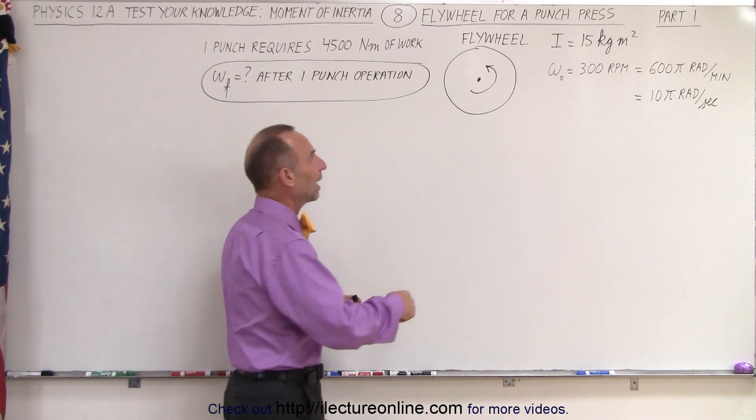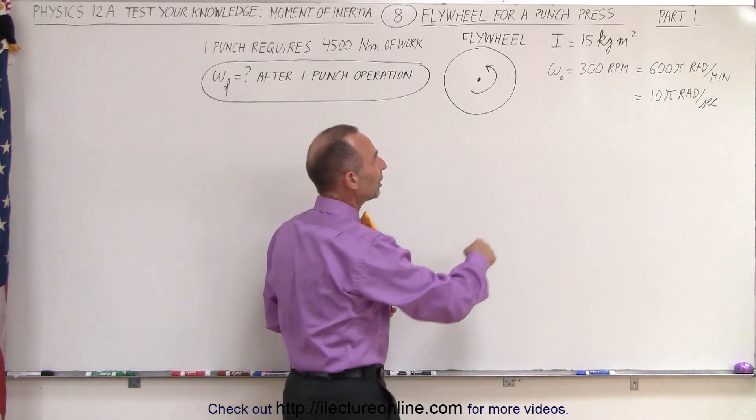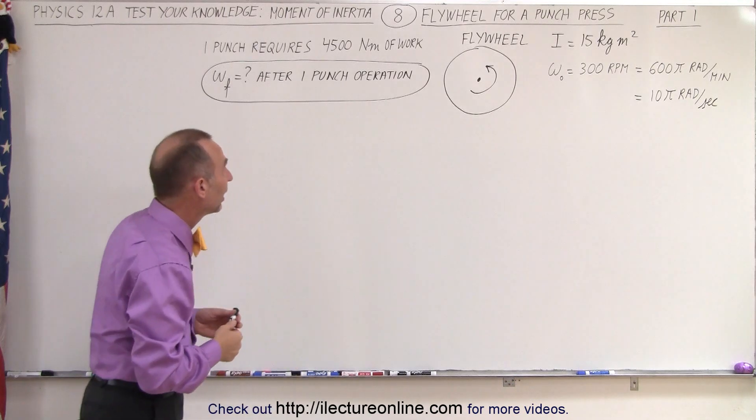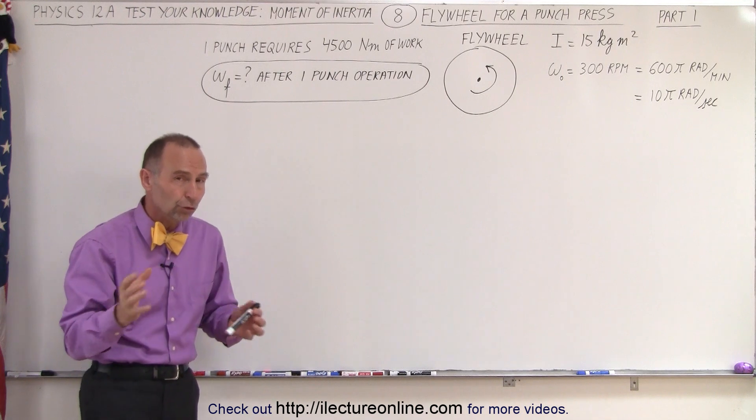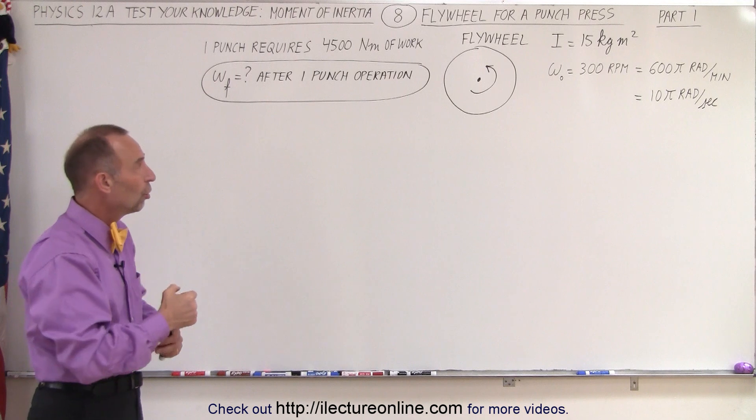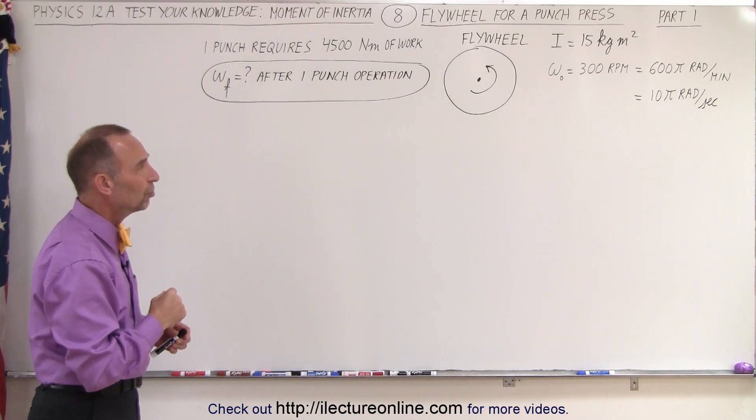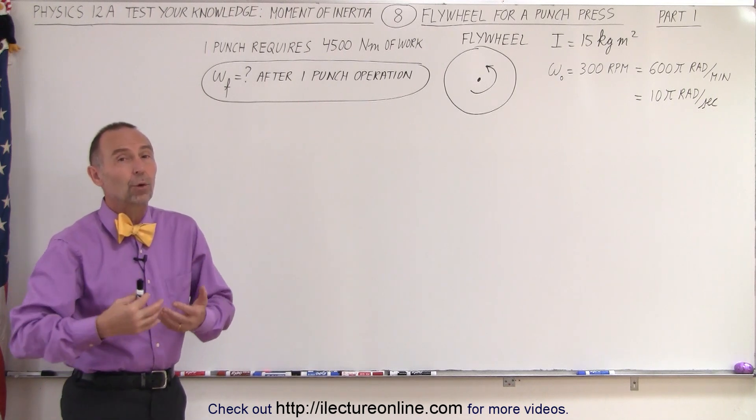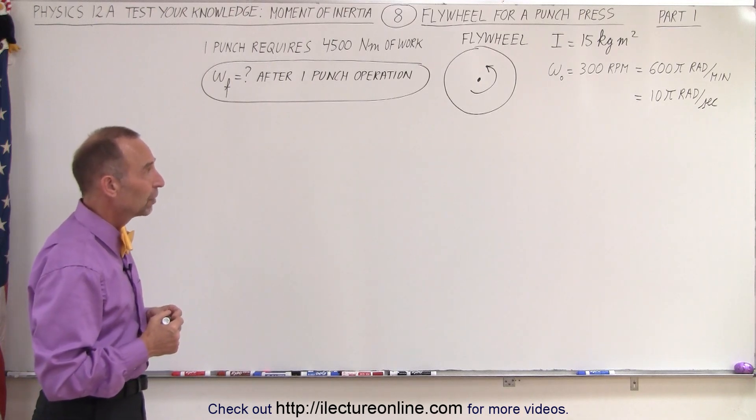So in this case, we have a flywheel that has a moment of inertia of 15 kilogram meters squared, initial angular velocity of 300 rpm, which is about 10π radians per second, and a single punch requires 4,500 newton meters, or joules, of work. So now the question is, when it makes a punch, what will be the final angular velocity after a single punch? And then we'll have a part two to that, that we have to calculate how much power or work is required to get it back up to its original velocity. So let's try this.